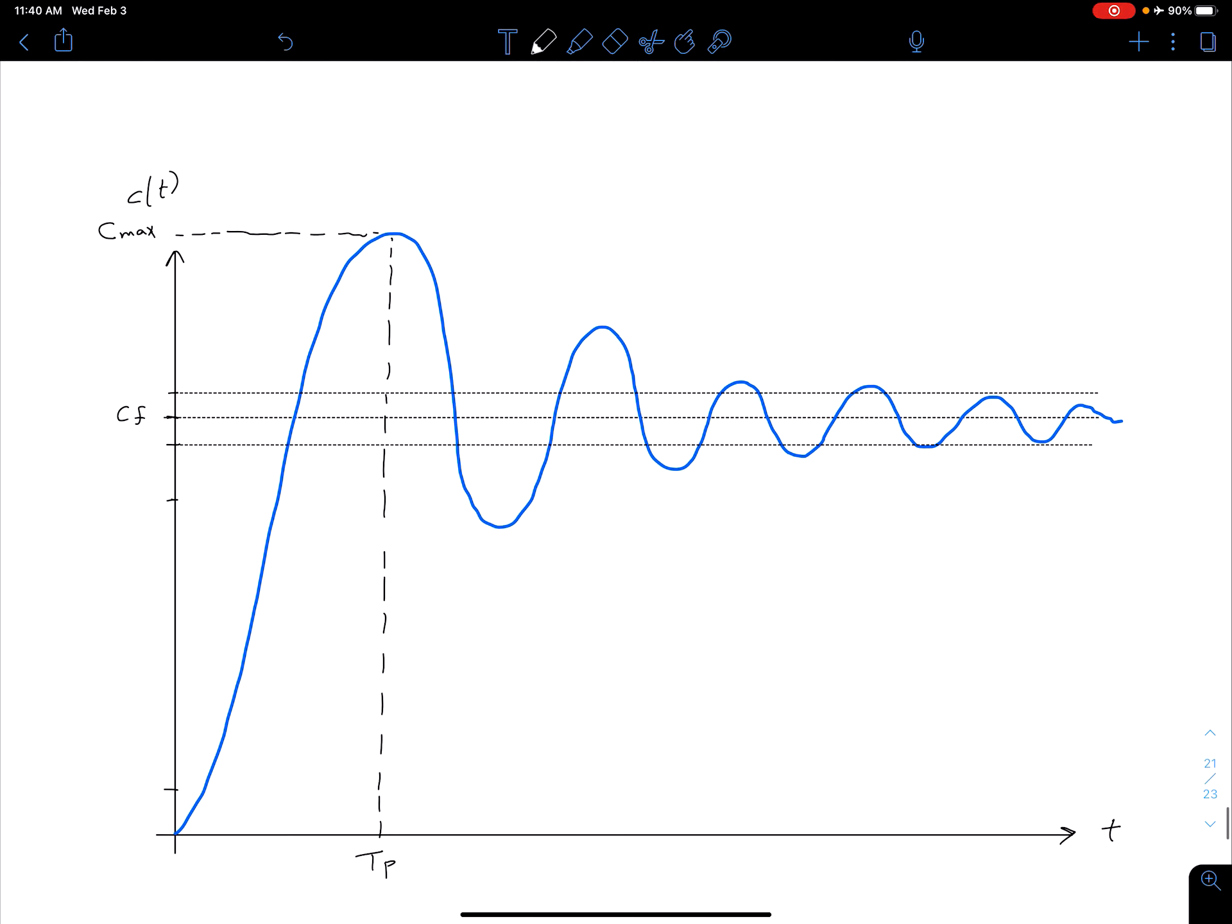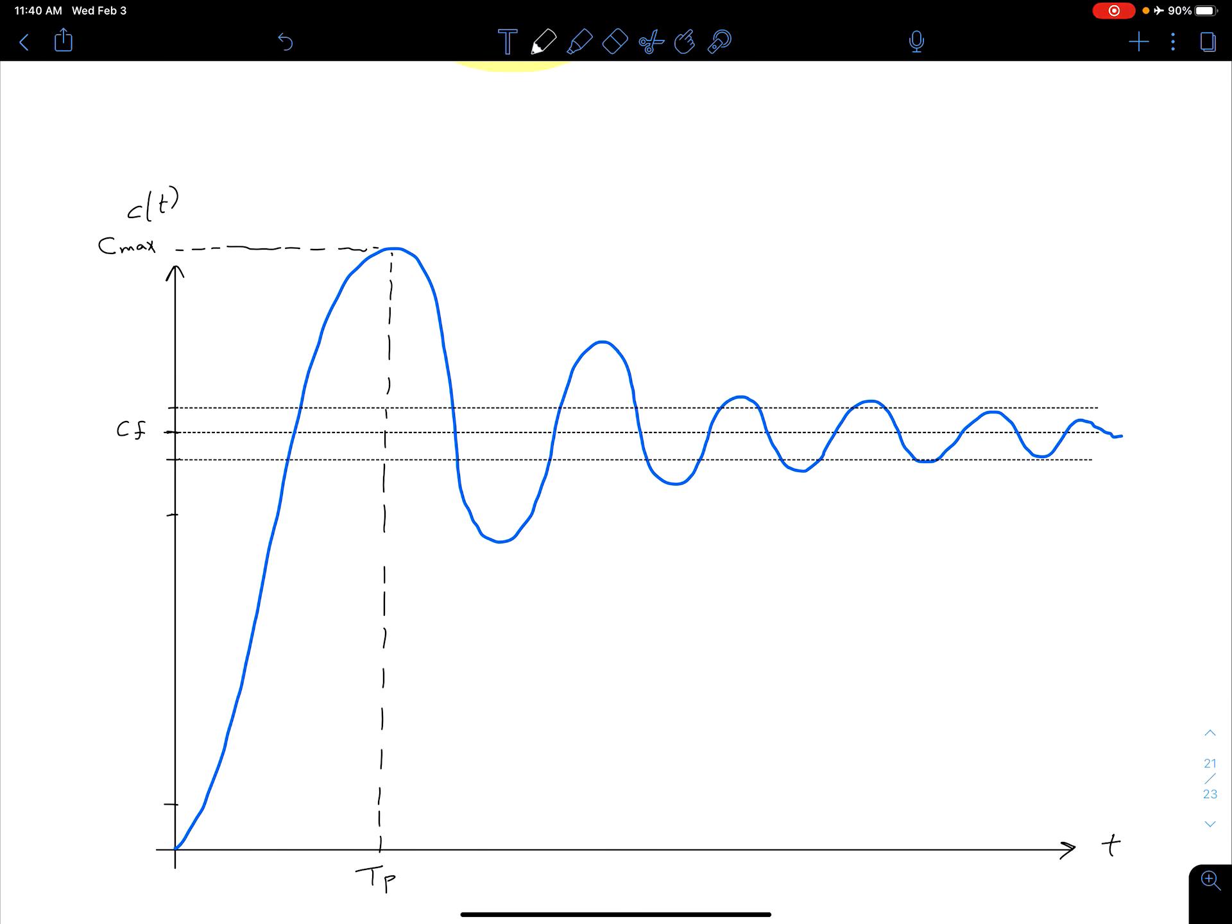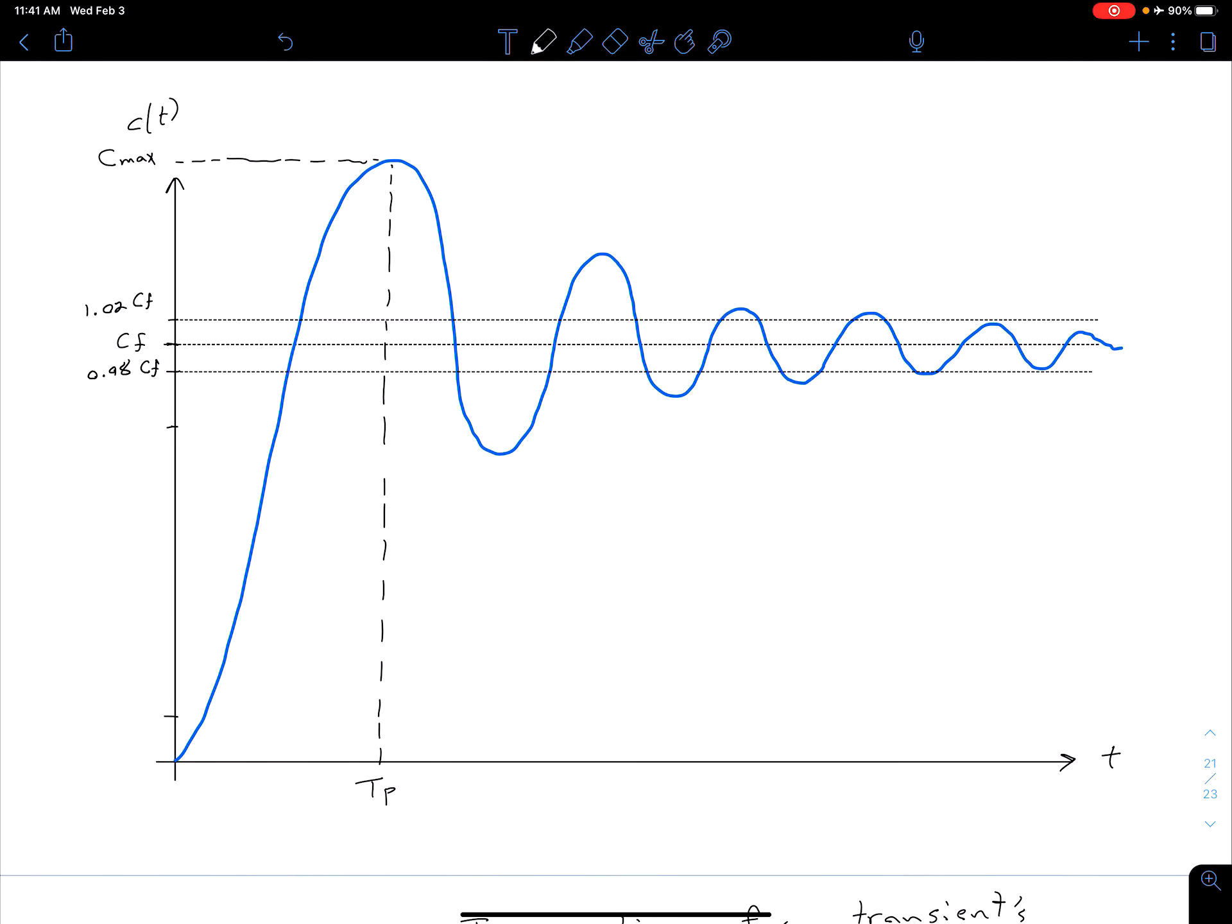Coming back up here to our response type, let's see what that looks like in our graph. What you'll notice is I've added two more dashed lines here. We can say that the bottom one here is 0.98 times RCF, and this upper one is 1.02 times RCF. So with our settling time, we're saying, where does this blue curve go inside of that, but also stay within that afterwards?